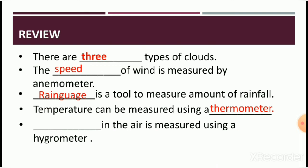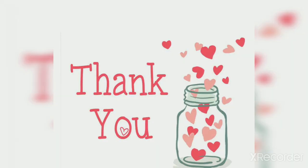The last one: dash in the air is measured using a hygrometer. A hygrometer is used to measure the water vapors, or the amount of humidity. So the correct answer is humidity. I hope you have enjoyed today's lesson. That's all from my side. Thank you.